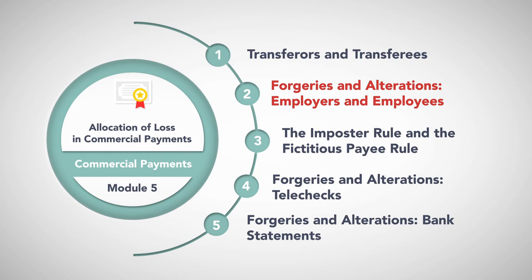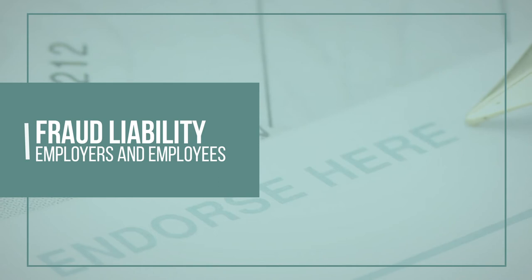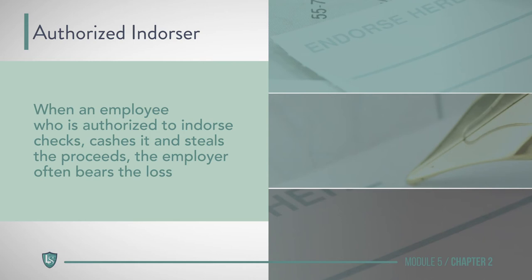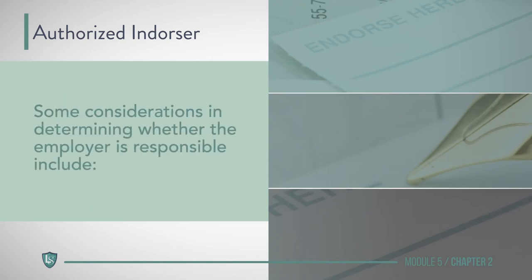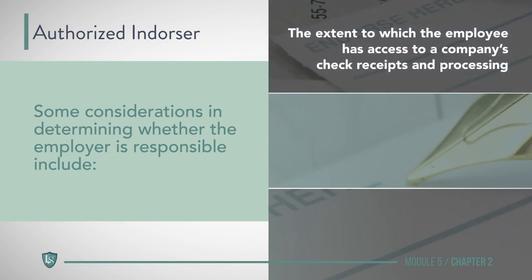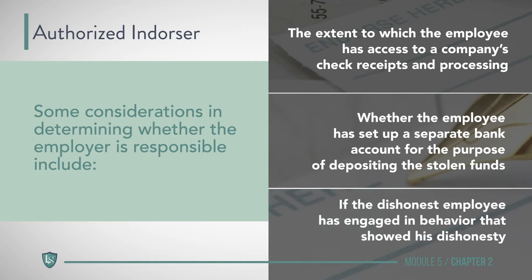Forgeries and Alterations — Employers and Employees. The Code addresses two specific situations involving employers and fraudulent endorsements by employees. The first is when an employer receives a check as payment for goods or services. An employee authorized to endorse checks can properly do so and deposit the check in the employer's account. However, if a dishonest employee endorses and cashes it and steals the proceeds, the employer often bears the loss. Considerations include the extent of the employee's access to check receipts and processing, whether the employee set up a separate bank account for stolen funds, and whether the employee showed prior dishonest behavior.